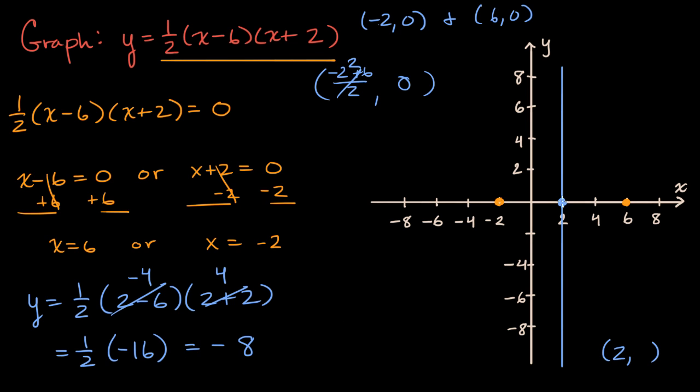So our vertex, when x is equal to two, y is equal to negative eight. And so our vertex is going to be right over here. Two comma negative eight.